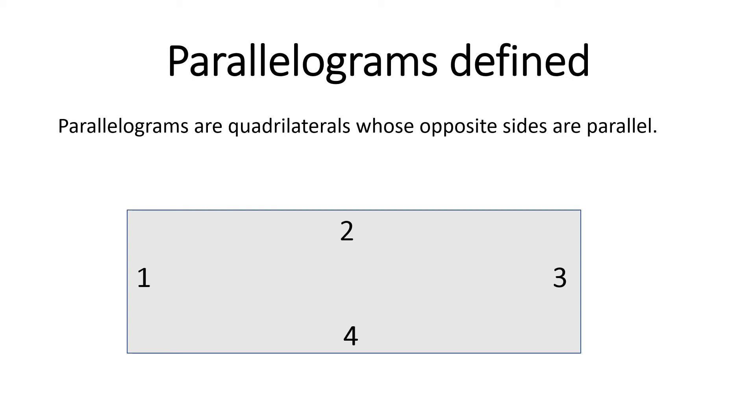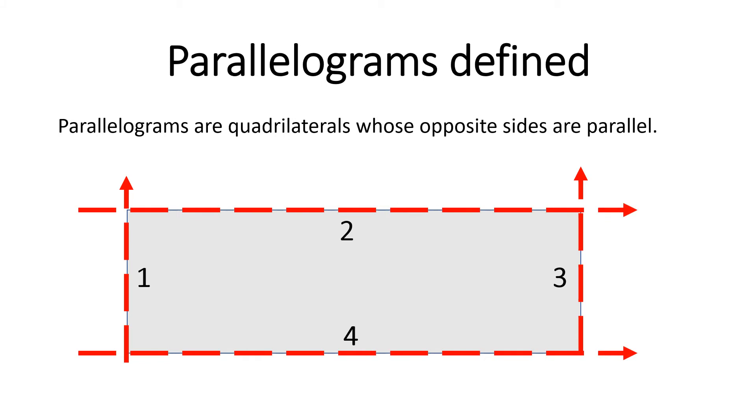So when we look at sides one and three, if we draw imaginary lines, those lines are parallel. Sides two and four, if we draw imaginary lines, the lines are also parallel. So this is a parallelogram.